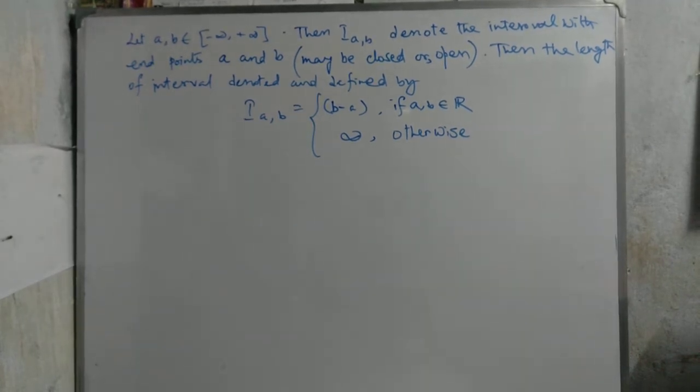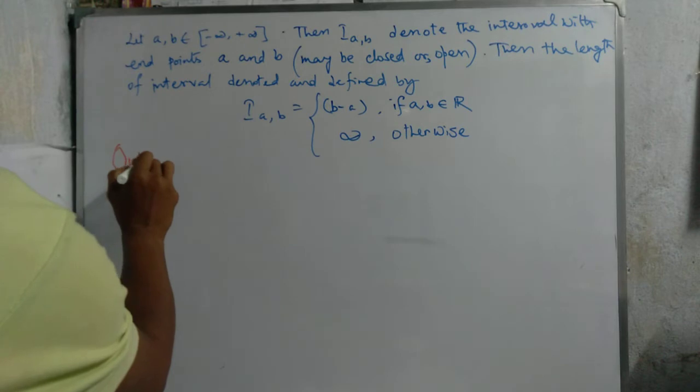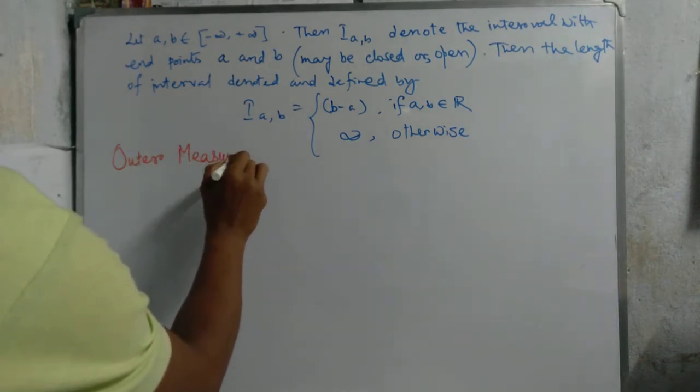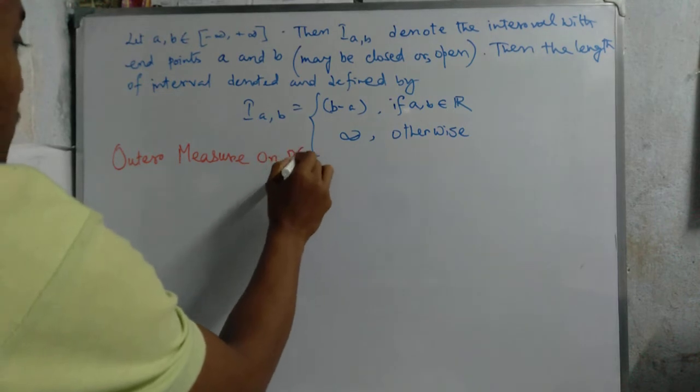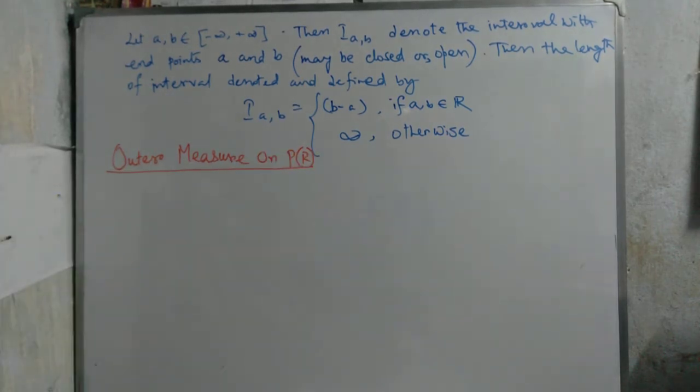Then we talk about outer measure on PR. The set function mu star from PR to zero to infinity is defined.